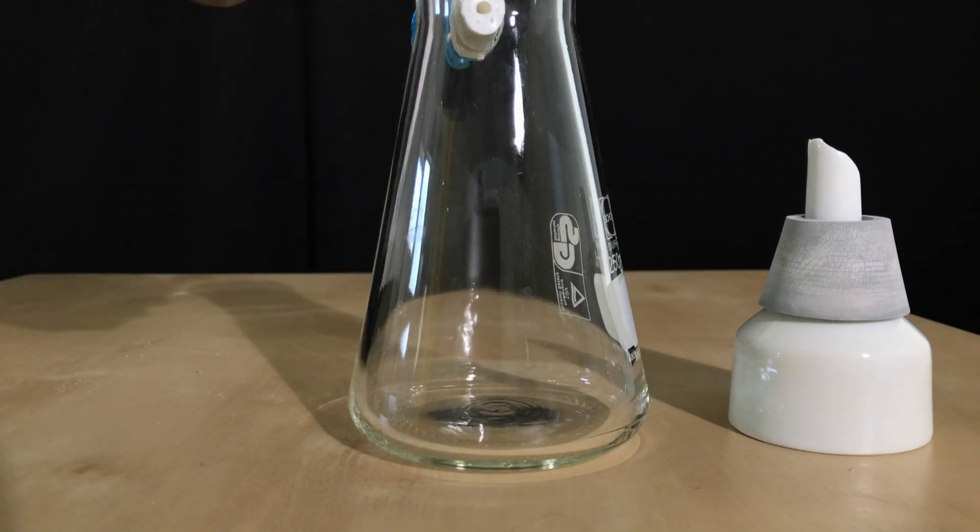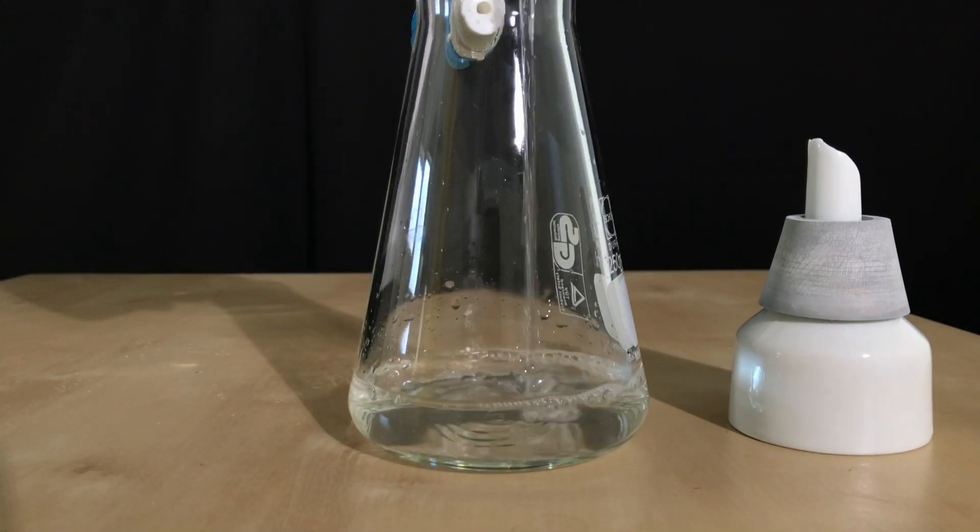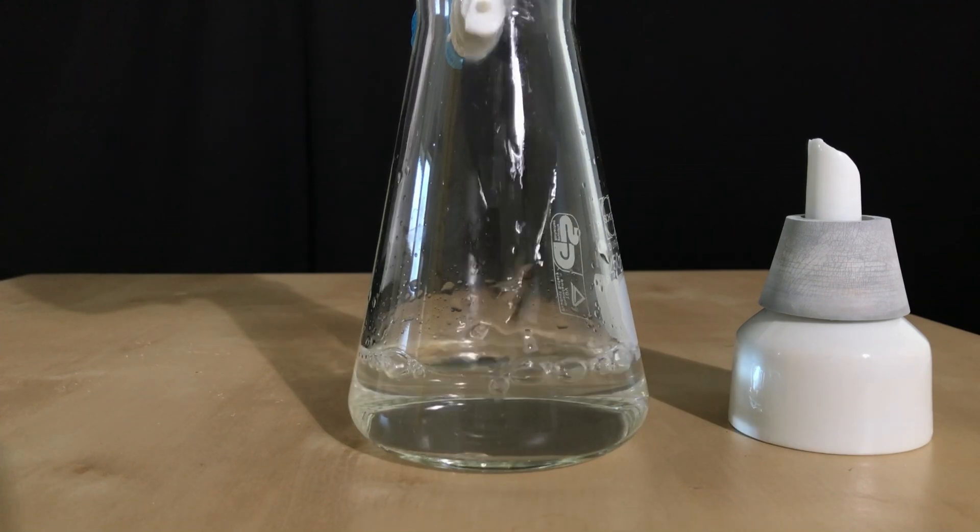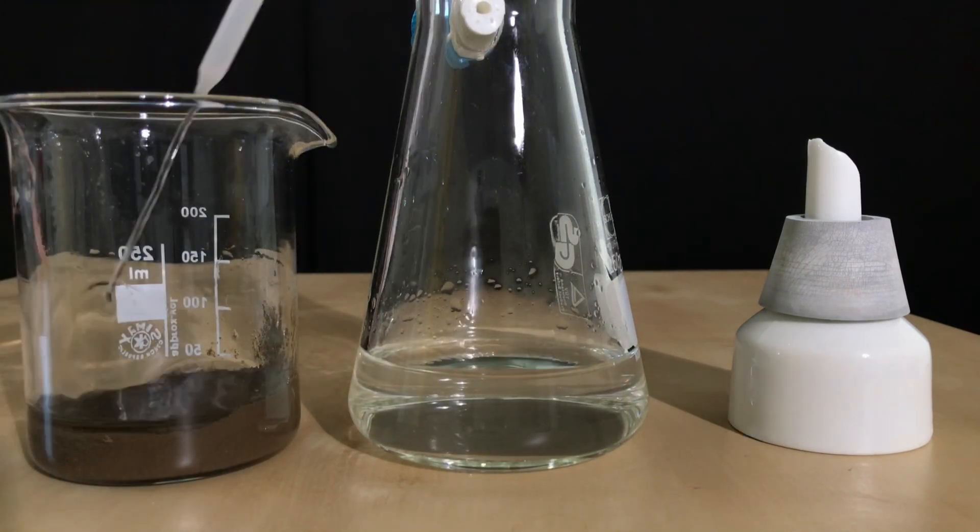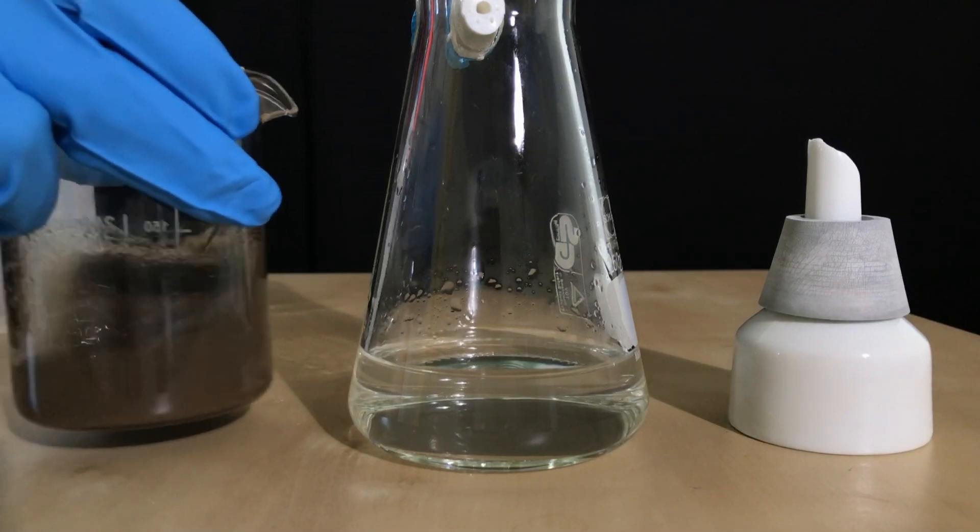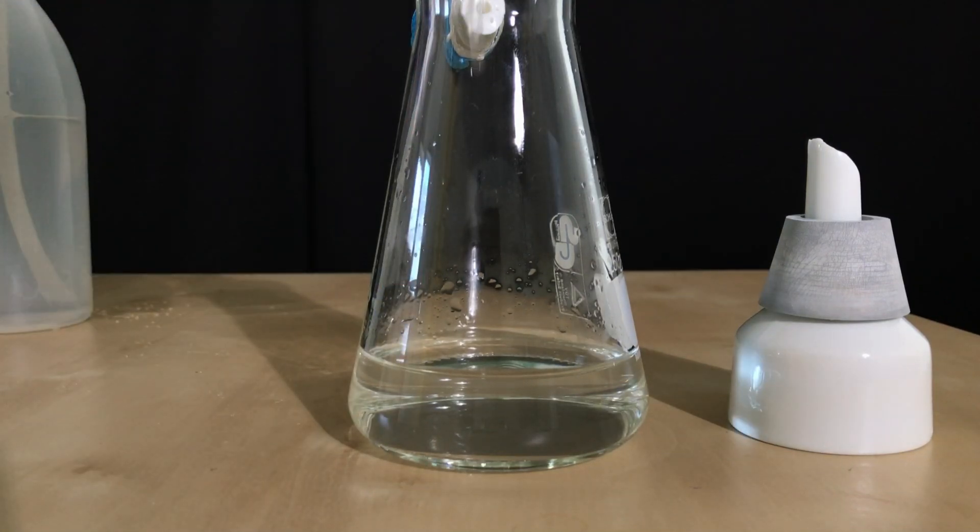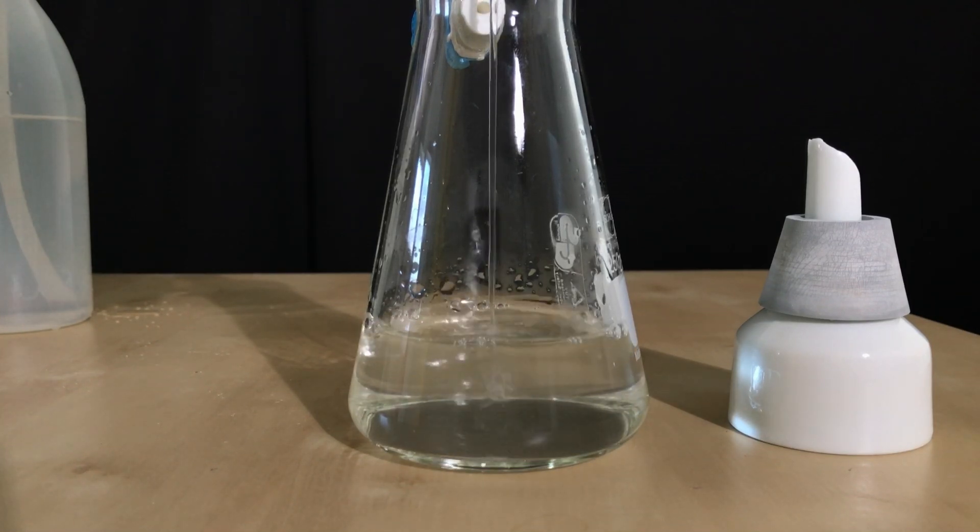As it settled down anyways, we can decant off the first part of the solution without having to filter it. This part of the solution should contain leftover sodium hydroxide and also sodium nitrate. To get rid of even more of the contaminants, the silver oxide was rinsed with a generous amount of distilled water.